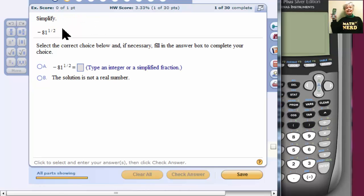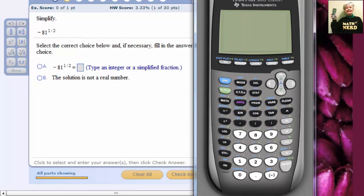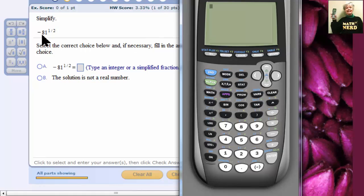This is a very dangerous problem. It looks like we're taking the square root of negative 81, but we're not. Be careful. There are no parentheses here. So what we're doing is we're taking the square root of 81, and there's a negative in front. So if you were doing this on the calculator, you would say negative square root of 81. Enter. And the answer would be negative 9, which is correct.